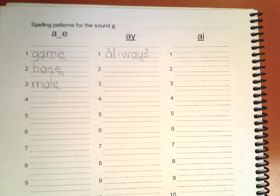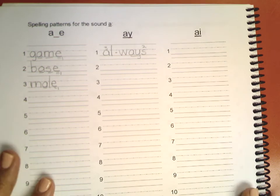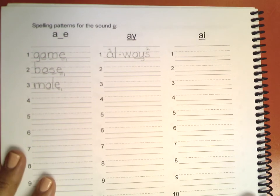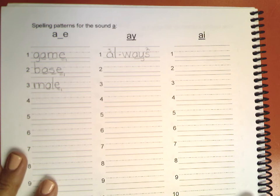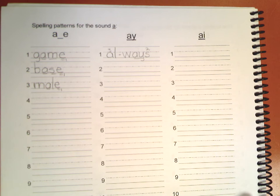All right class, we will start on page 76. What do we have on page 76? Good, these are our A's — the different ways we can make the A sound in English.